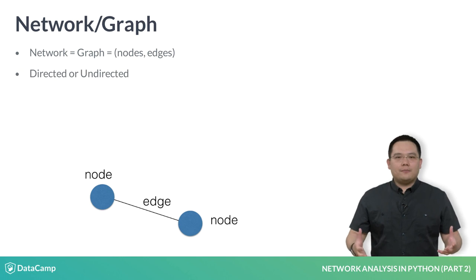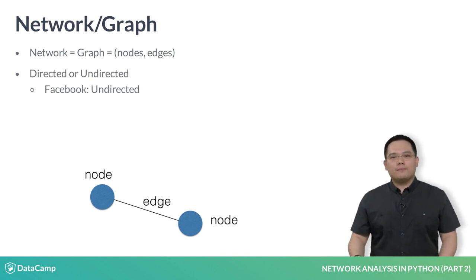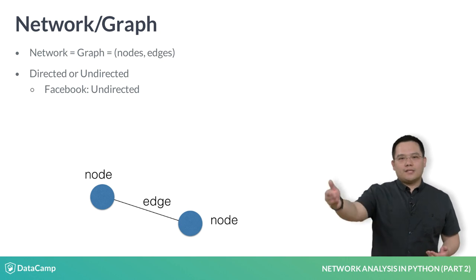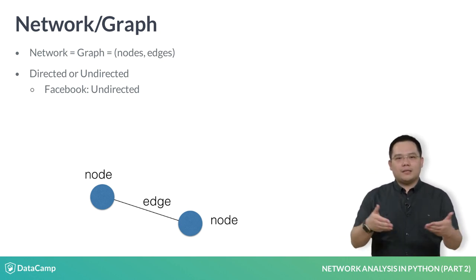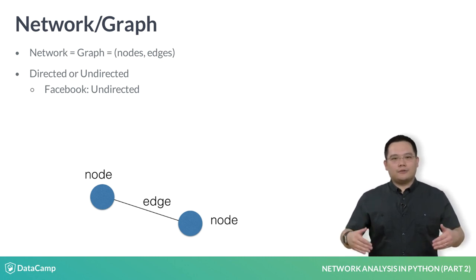A graph can be directed or undirected. Previously we saw some examples of undirected graphs, such as Facebook. If I request to connect with another person on Facebook, once the other person accepts the friend request, we immediately connect and no direction is implied, thus it is an undirected graph.